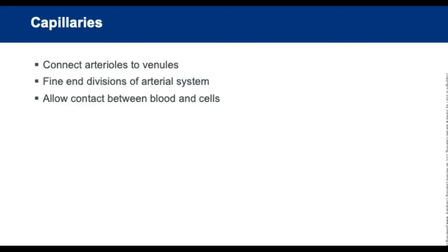Capillaries are tiny blood vessels that connect arteries to venules. Oxygen and nutrients pass from blood cells and plasma through the thin walls of capillaries into individual tissue cells. Capillaries allow blood to move through them one cell at a time.